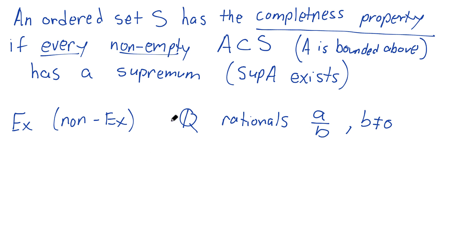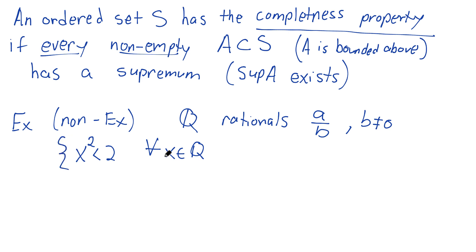Why is Q a non-example? Well, let's take a subset — the classic example: the set of all x in Q such that x squared is less than two. So x can be any rational number such that its square is less than two. This set does not have a supremum. It does have upper bounds — namely, root two will be an upper bound. If you look at this inequality and try to solve it the normal way, taking the square root of both sides, we know that x has to be less than root two.